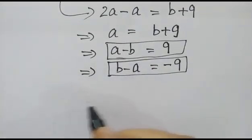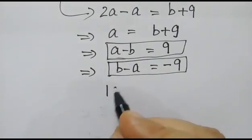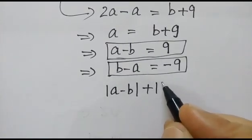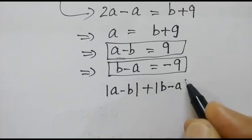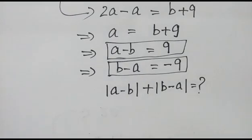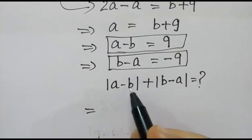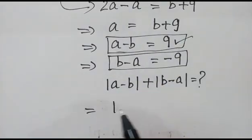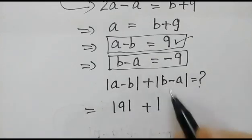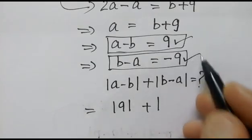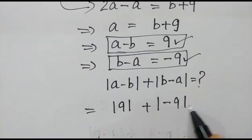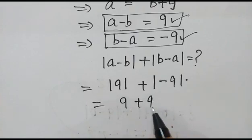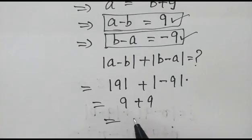Now we have to find out the value of mod of a minus b plus mod of b minus a. Mod of a minus b is mod of 9, and mod of b minus a is mod of minus 9. So 9 plus 9 is equal to 18.